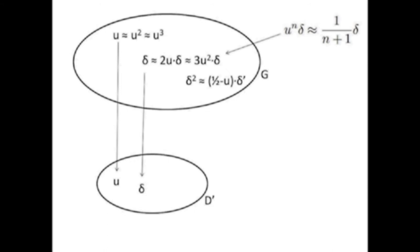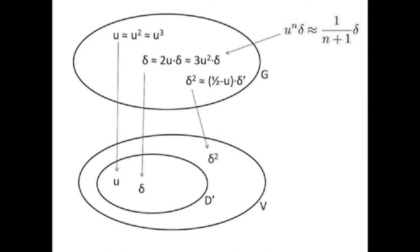There are also other elements in G. For example, it is possible to prove that delta-squared can be associated to the distribution (1/2 − u) times delta-prime, and this can be mapped to an element in a bigger set V. V is a vector space, not a differential algebra. In V we use associativity, but elements of V do not satisfy the Leibniz rule. When working with distributions, we always want to work in G and may project only the final result to D-prime using the association criterion.